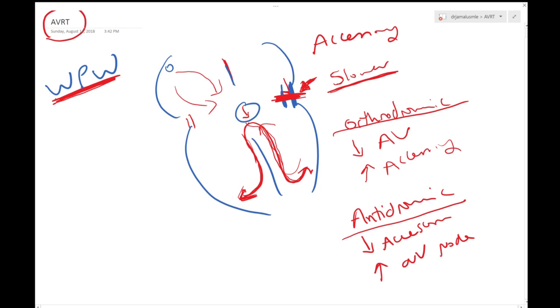So in your exam they will show you an EKG and they will show you a normal sinus rhythm. But you will recognize that the P to R interval is short, and you will recognize that the upslope of the R wave is slurred. If you see this, you have to think that this is a delta wave.